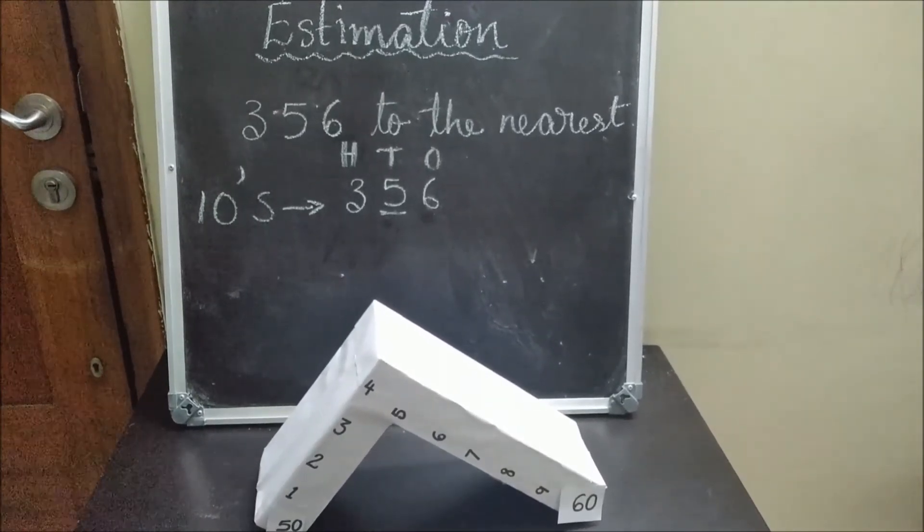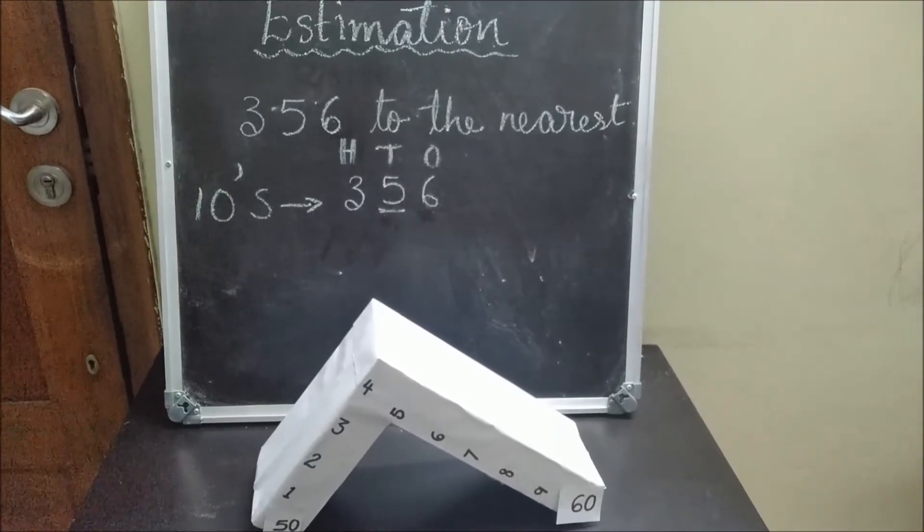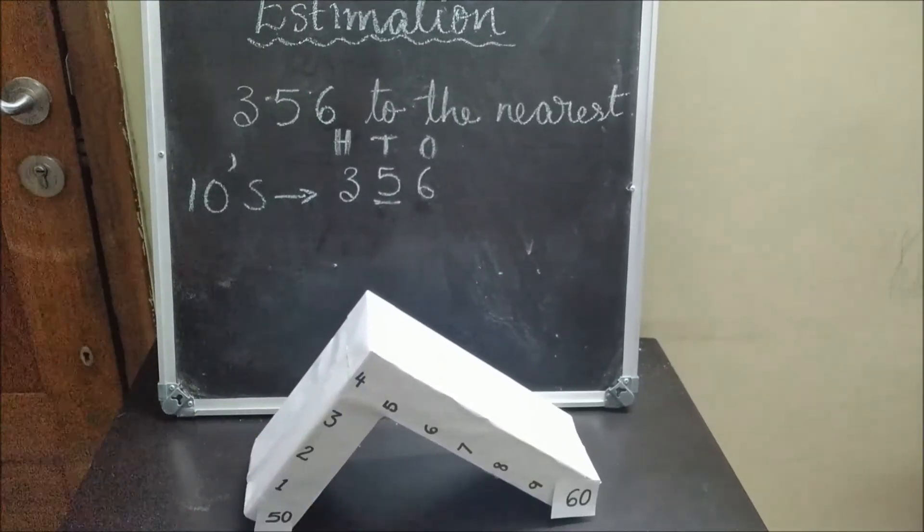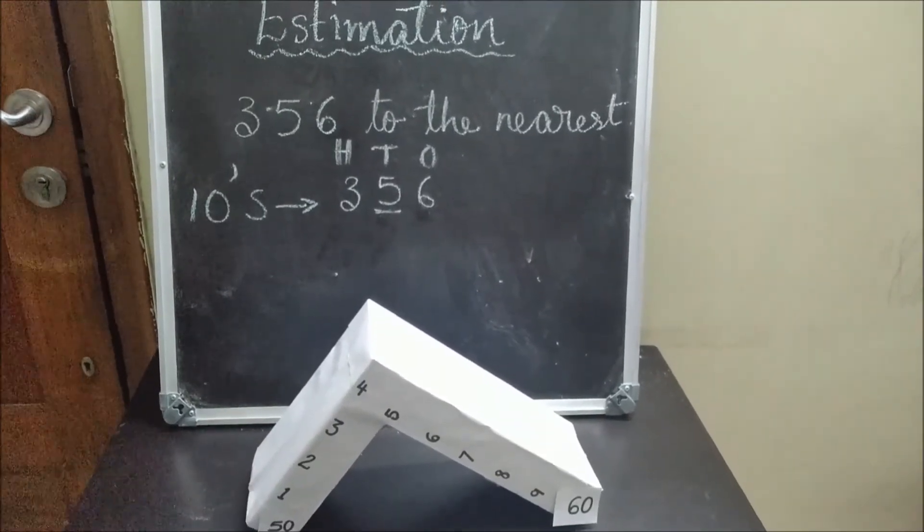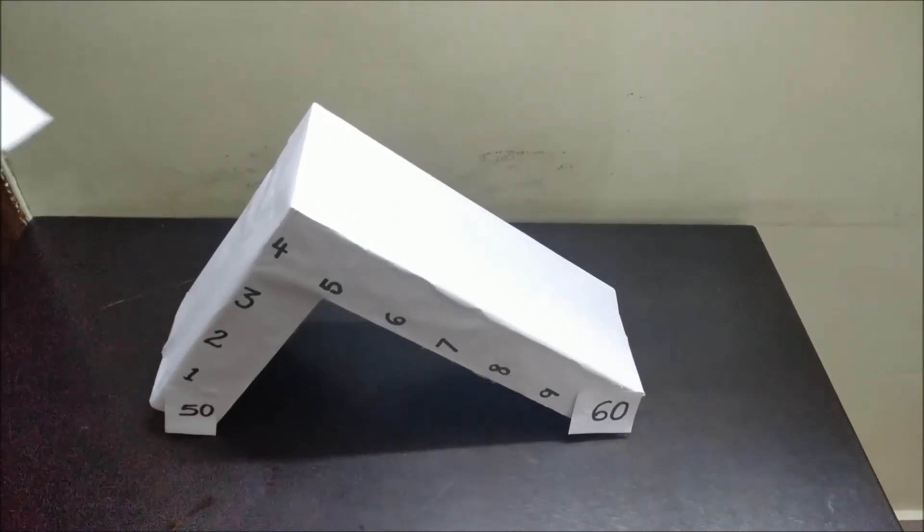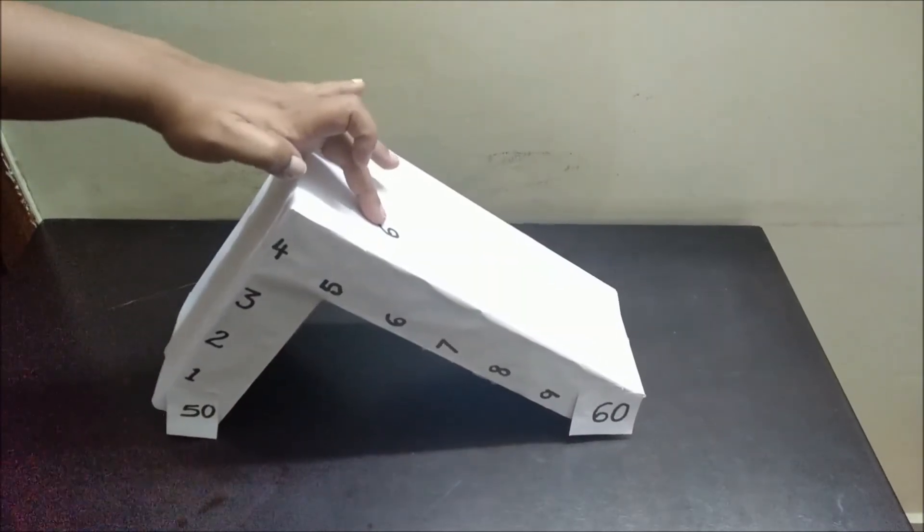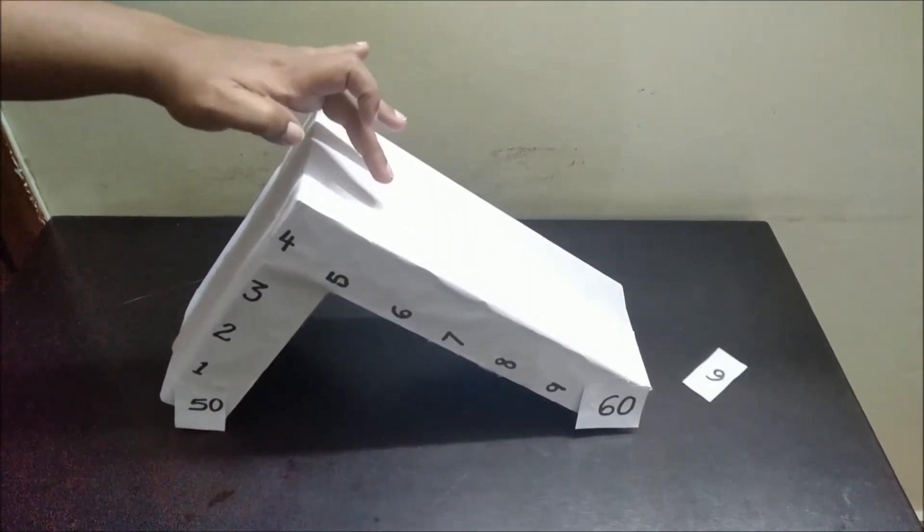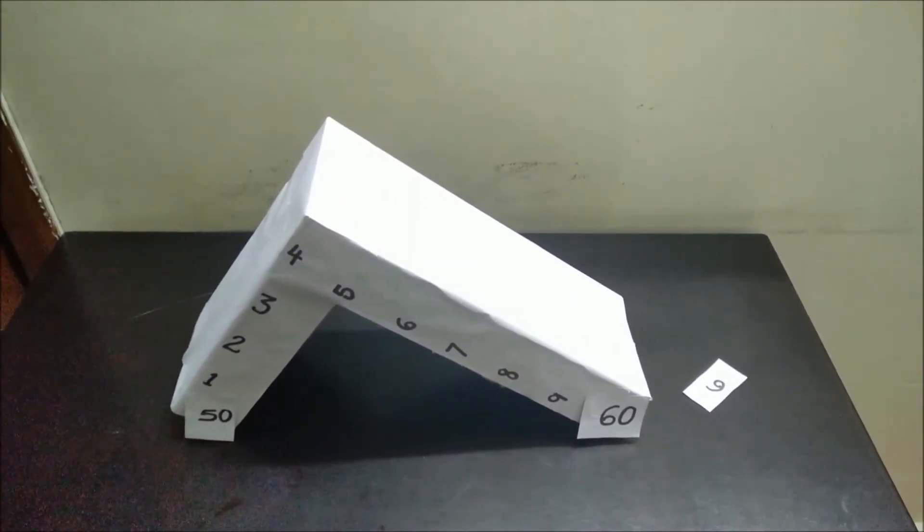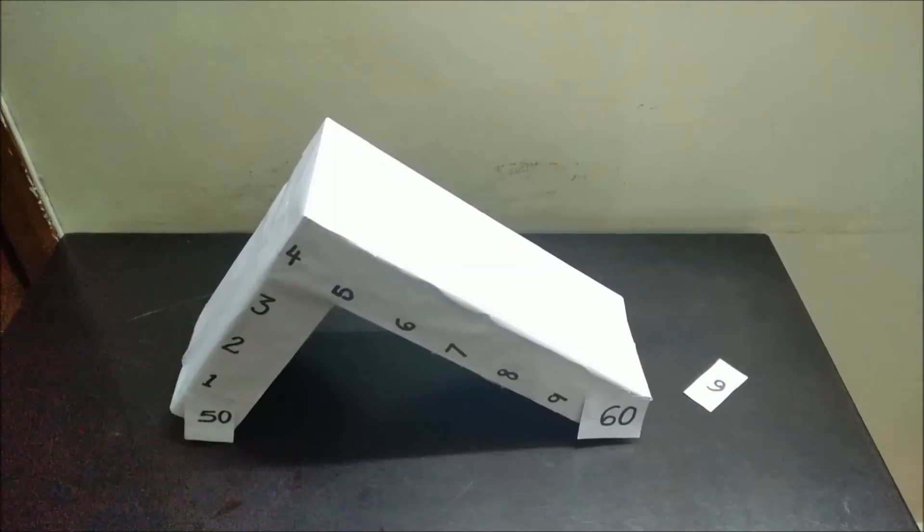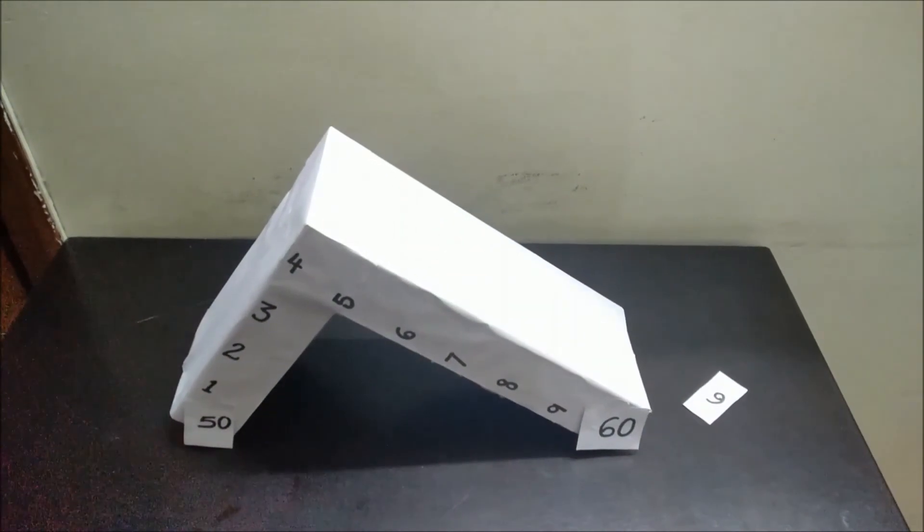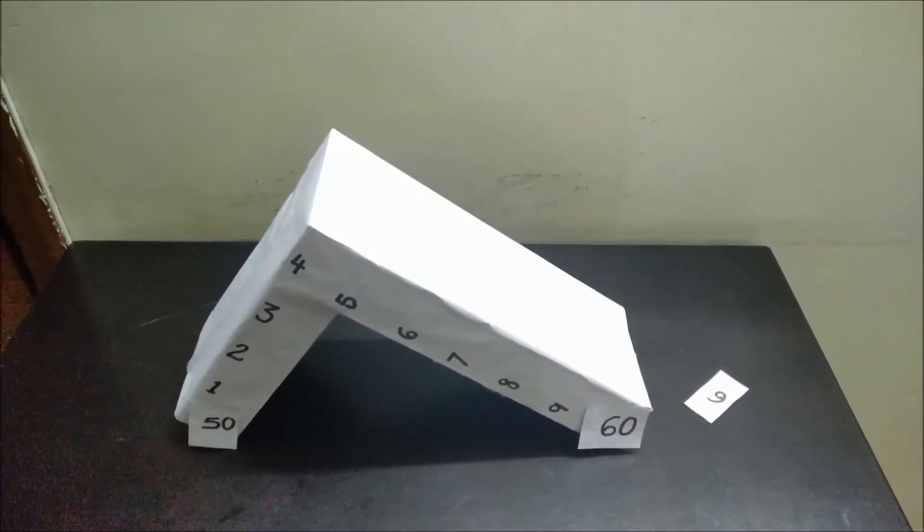56 comes in between 50 and 60. That's why I have written 50 and 60 on the slide. Let me keep the number 6 on the slide and see which side it falls. Do you have any guesses? Yes, it slides towards 60. 56 is approximately equal to 60. So, 356 is approximately equal to 360.